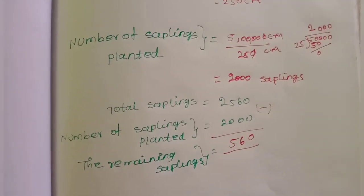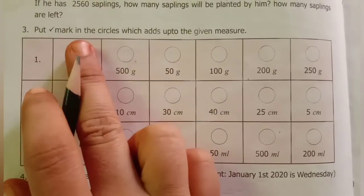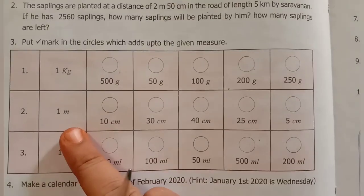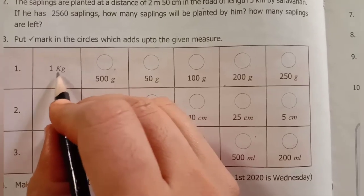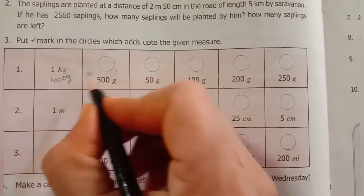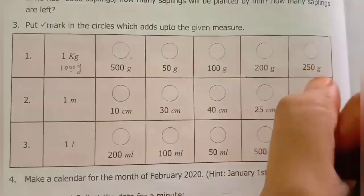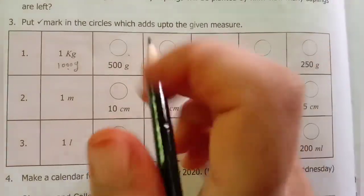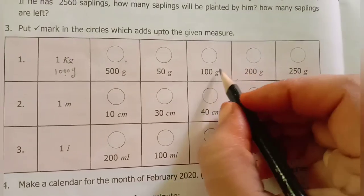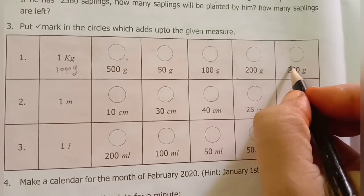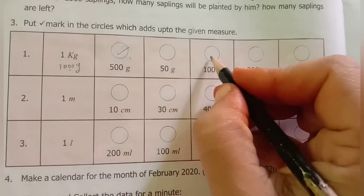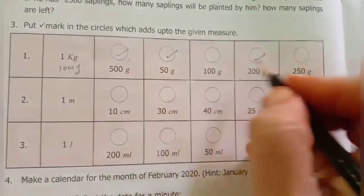Next, the third problem: Put a tick mark in the circles which add up to the given measures. 1 kg equals 1000 gram. We have circles with values: 500, 500, 750, 750, 250, 250, 250. Add them up to get 1000 grams.